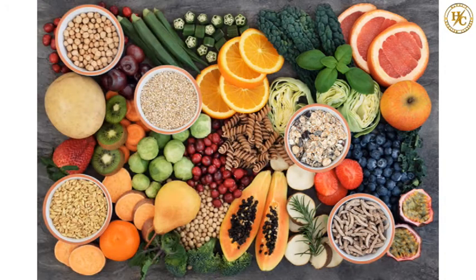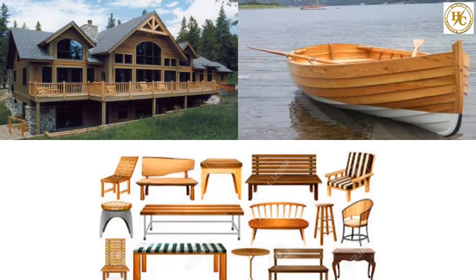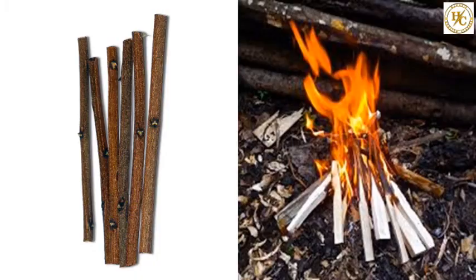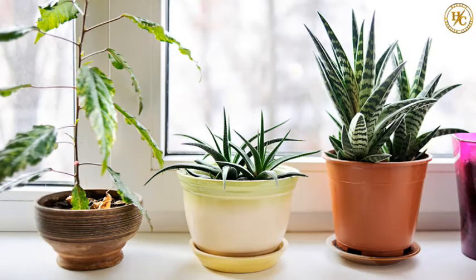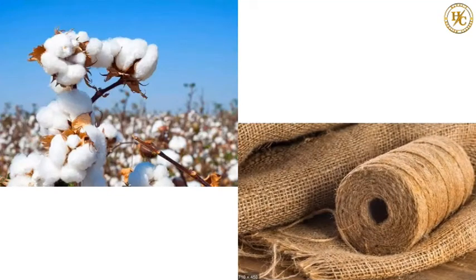Just as we need animals, we also need plants. Plants give us food grains, vegetables and fruits to eat. We need flowers to make fragrances. We use tree barks and sticks to make houses, boats, furniture, etc. We also use sticks as fuel. Plants purify air and give us oxygen. We use leaves, flowers and fruits to make medicines. We also get fibers like cotton and jute from plants.